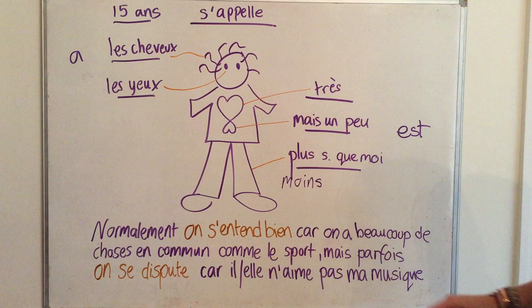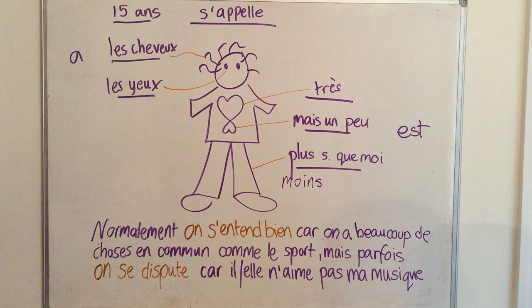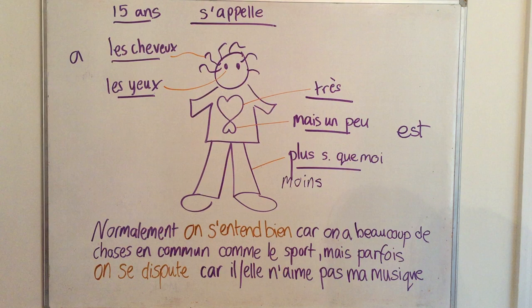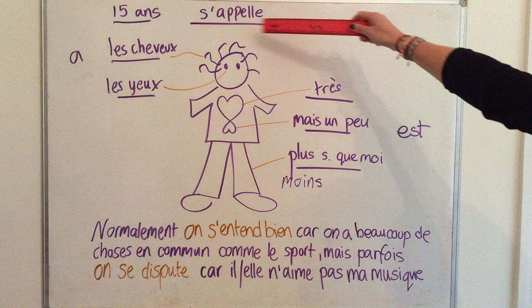I've put them in brown because they're the bits that people mostly go wrong on. I want you to say five times: 'on s'entend bien' — and 'on se dispute' — because repetition is the way of getting your brain to remember things. So here is the full sentence: 'Normalement, on s'entend bien, car on a beaucoup de choses en commun, comme le sport, mais parfois on se dispute, car ils n'aiment pas ma musique.'